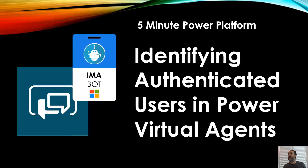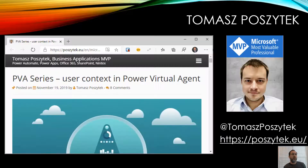This is 5-Minute Power Platform and today we're going to talk about identifying authenticated users in Power Virtual Agents — both setting up the authentication and then, once someone's authenticated, how do you find out who they are, what their name is, their email address, and so on. I first read this method on my fellow MVP Thomas Poschek's blog. He's got some amazing stuff on there, including a detailed post on how to set this up — both the Power Virtual Agents authentication and what to do with someone once they're authenticated.